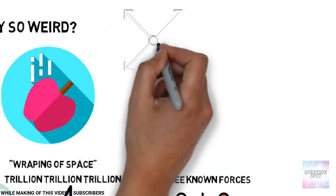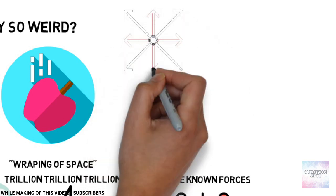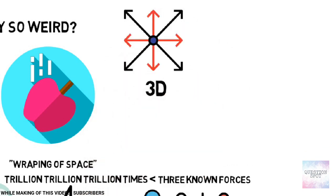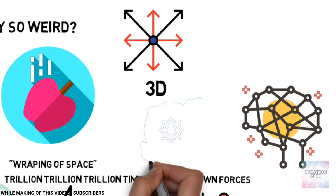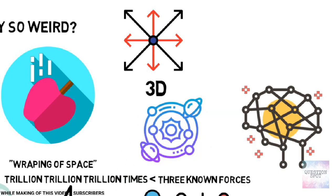One possibility, speculative at this point, is that in addition to the three dimensions of space that we notice every day, there are hidden extra dimensions, perhaps curled up in a way that makes them impossible to detect.